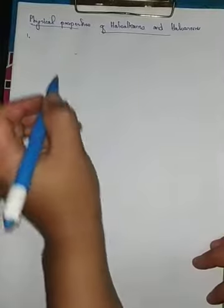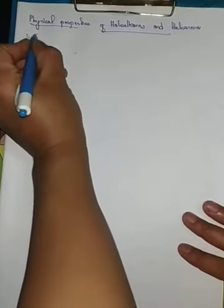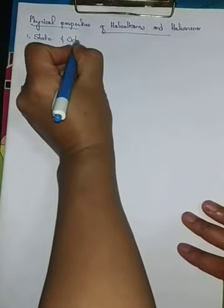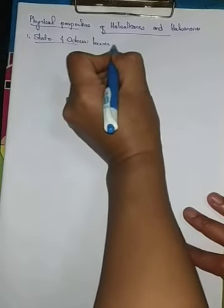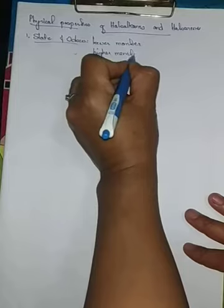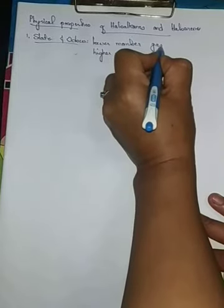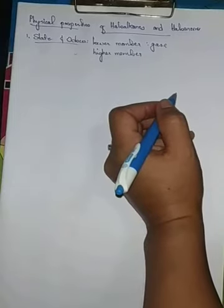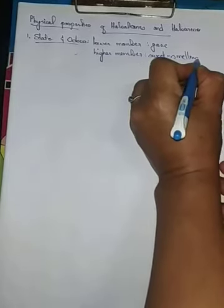Now firstly, moving on to the first physical property: physical state and odor. Odor means smell. The lower members such as bromomethane, chloroethane, and chloromethane are all gases. Whereas iodomethane and the majority of the higher members are sweet-smelling liquids.